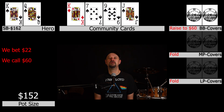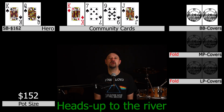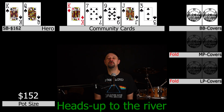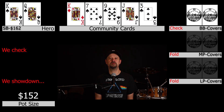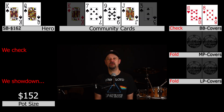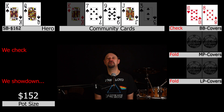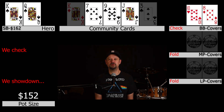We make the call and go off to the river heads up. The river comes out a three of clubs — we miss our draw. We check to the big blind, not sure what we'd do if he bets. However, the big blind checks back. Hero tables king-queen expecting to win, but the big blind turns over eight-ten offsuit for a straight to the jack. He says he thought we might have had queen-ten and was worried — that's why he checked back. We got a bit of a break on the river.